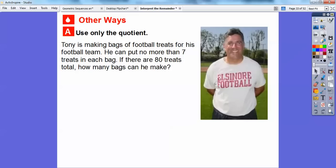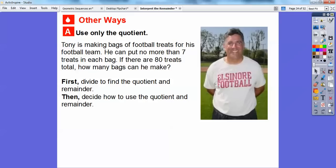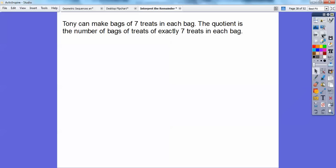Here's another way to use quotients here. Tony is making bags of football treats for his football team. He can put no more than seven treats in each bag. If there are 80 treats total, how many bags can he make? First we're going to divide to find the quotient and the remainder, and then second we're going to decide how to use the quotient and the remainder to this question right here. So we're going to go ahead and divide, and the quotient is going to be this 11 up here. So there's the 11, and the remainder is this three right there. Tony can make bags of seven treats in each bag. The quotient is the number of bags of treats of exactly seven treats in each bag. He can make 11 full bags, and then he'll have some leftover on that.